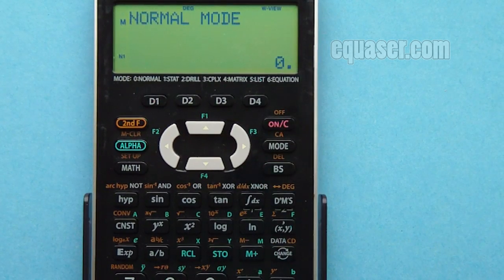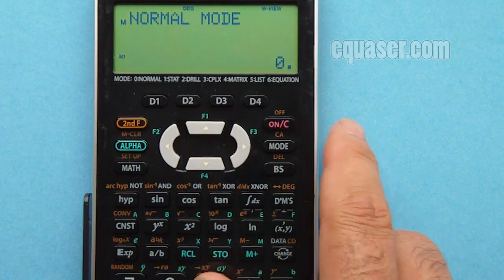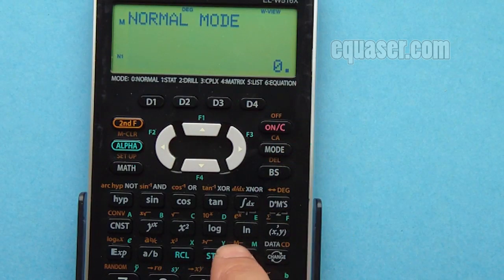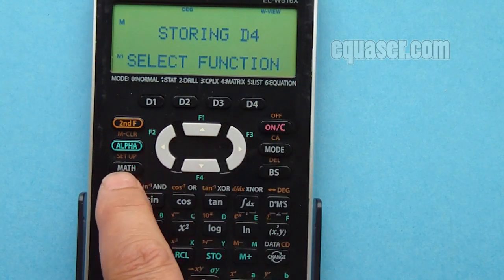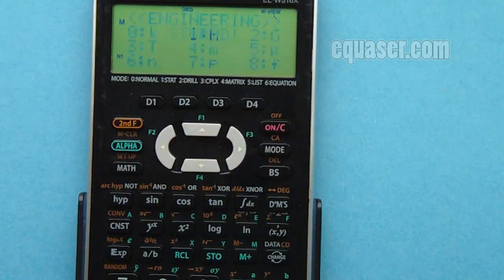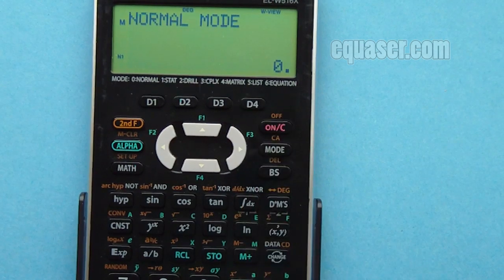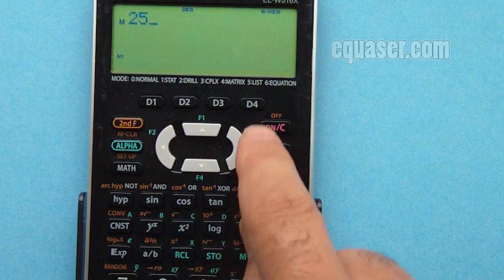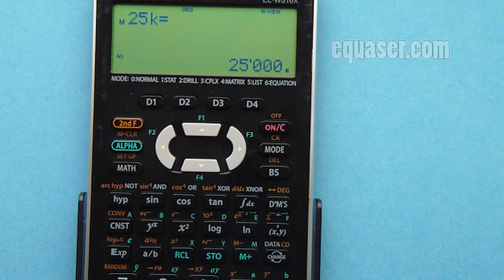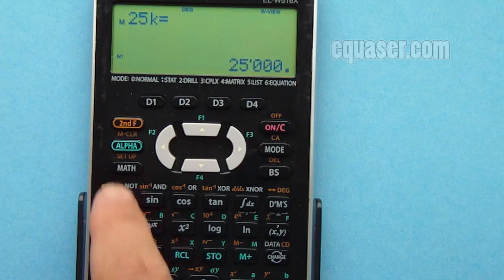Let's make this one kilo. Store D4, math, number three for engineering, and for kilo, zero. So now if I want to type 25 kilo, here is 25 kilo, done, which is 25,000.